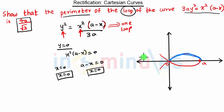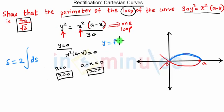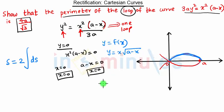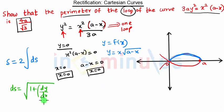The perimeter is 2 times the integration of ds. Since y is a function of x — we can write y = (x/√(3a)) · √(a − x) from the equation y² = x²(a − x) / 3a — our ds = √(1 + (dy/dx)²) dx. We will now find dy/dx.